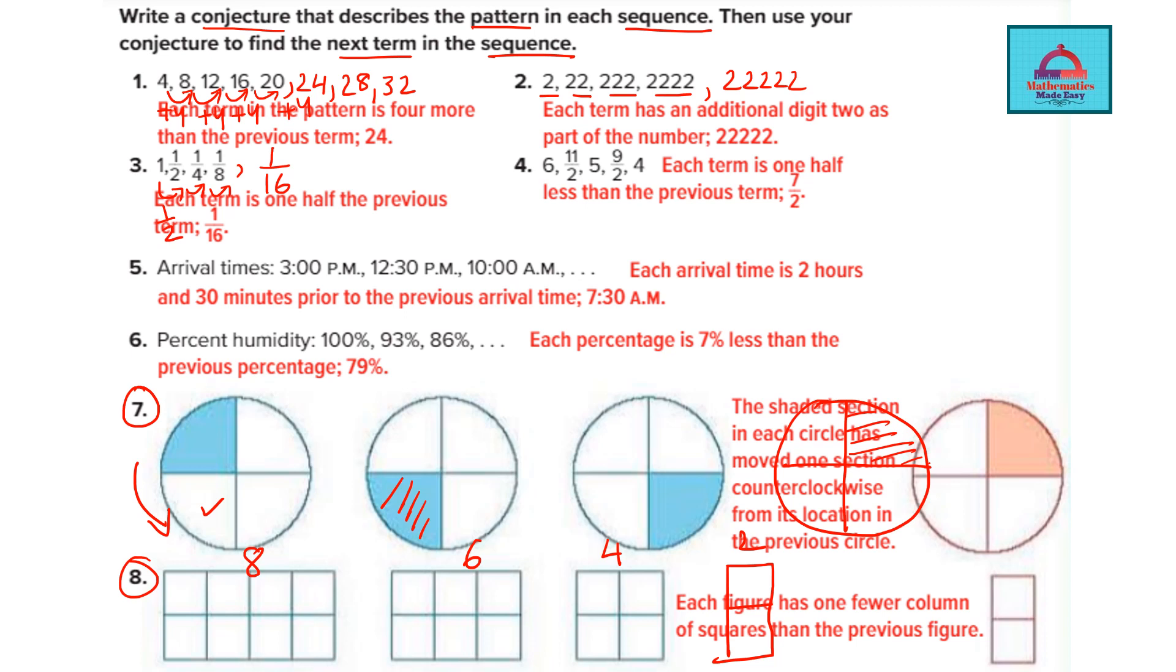So as you see there is a pattern that you can describe in each sequence and write a conjecture which helps you to find the next term. So let's see the correct answers of all these questions in the next slide.